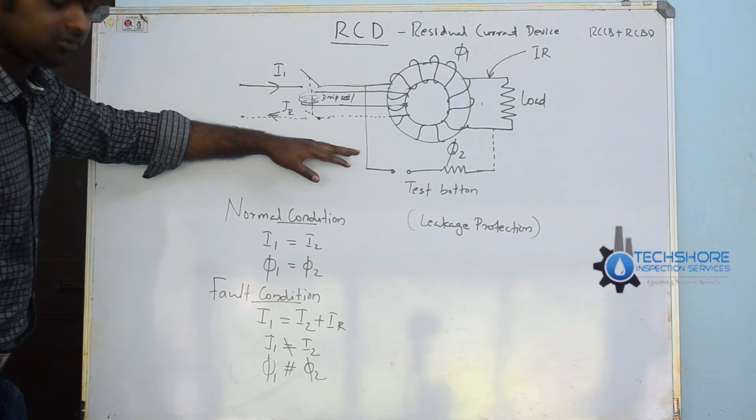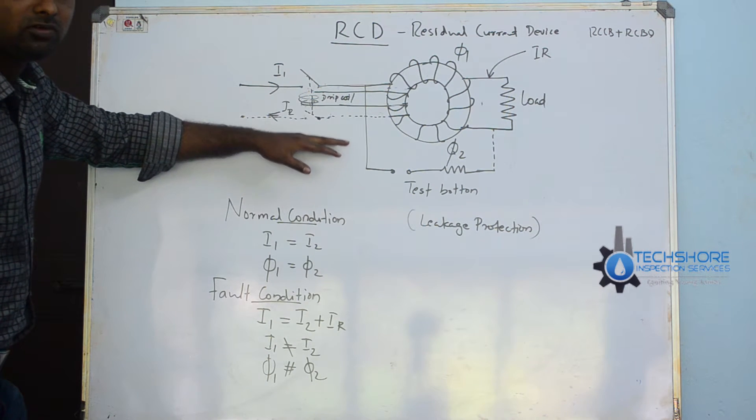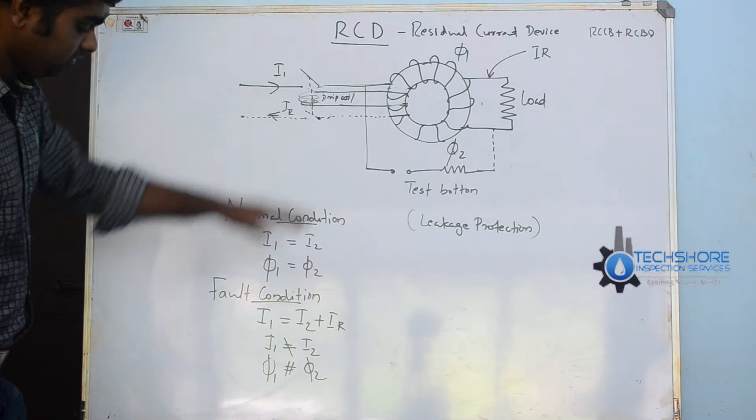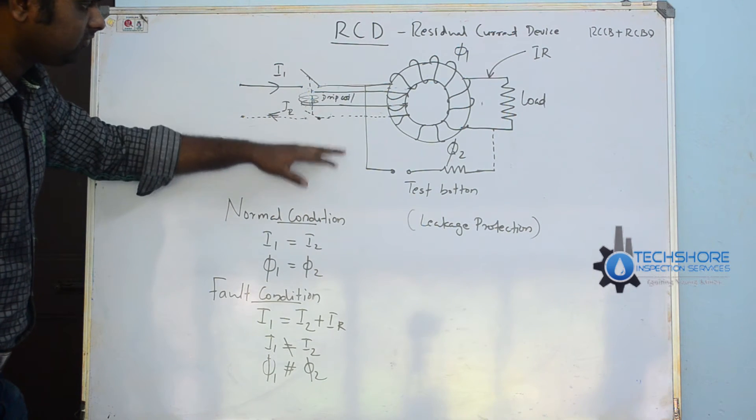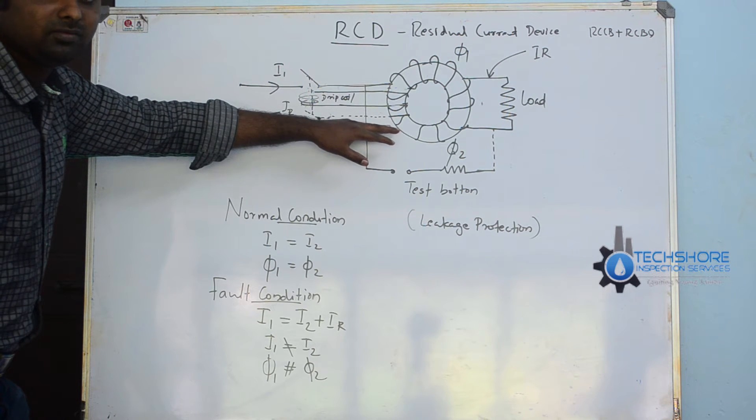Then what will happen is I1 is not equal to I2. The secondary current is not equal to the primary current. So there will be a difference in flux leakages. So the magnetic coil will be magnetized.